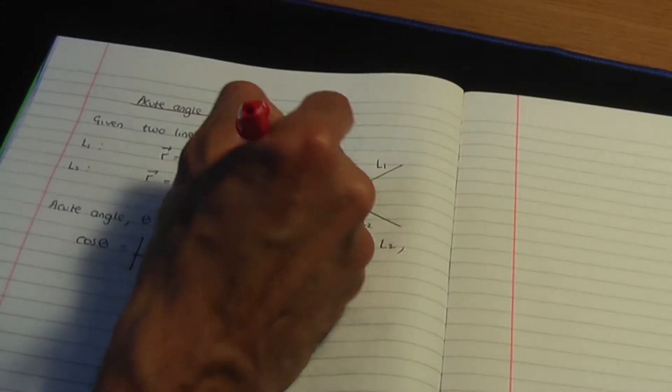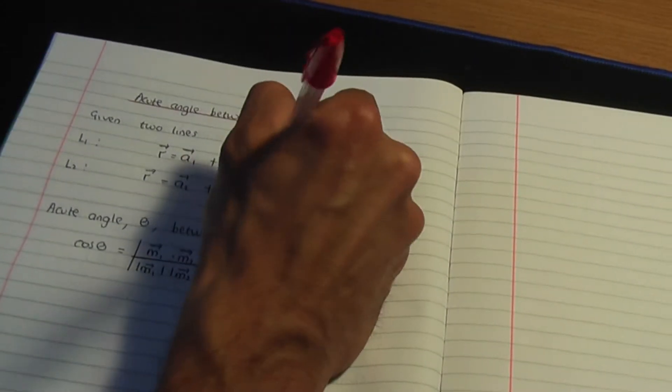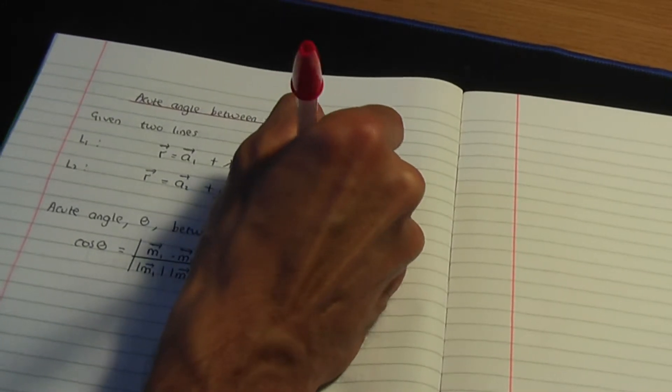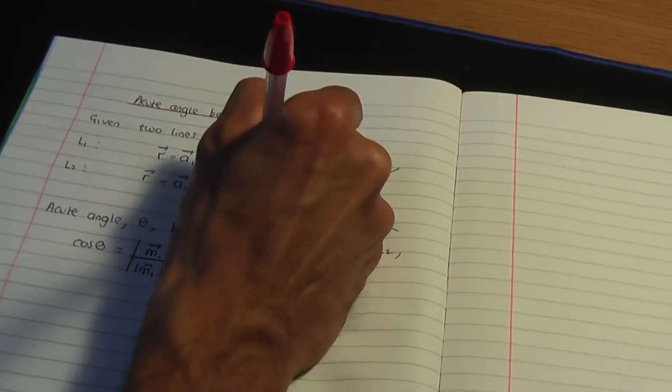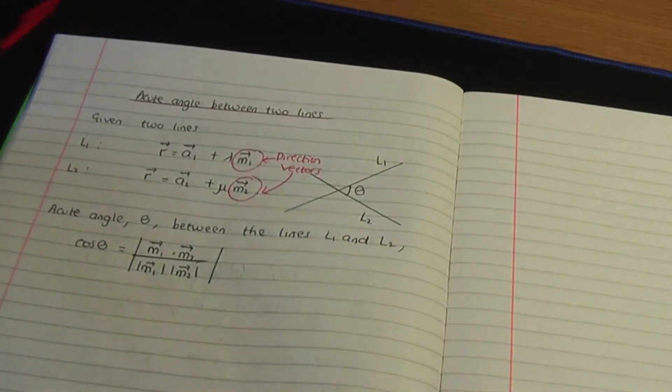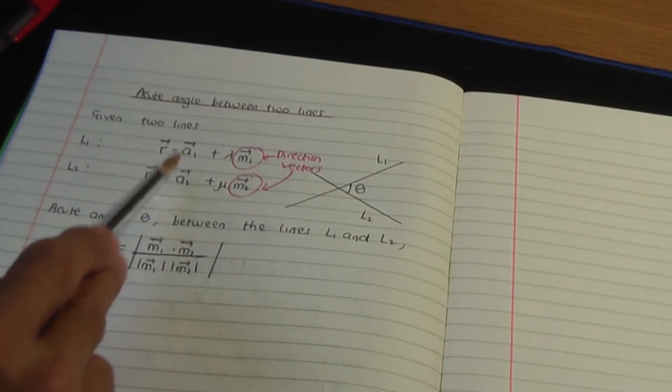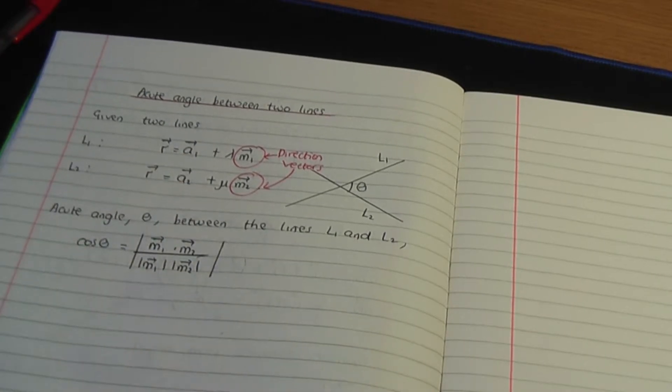So remember, these two vectors here and here, these are your direction vectors. It only depends on the direction vectors. It's not dependent on the position vectors of the fixed points on your line.